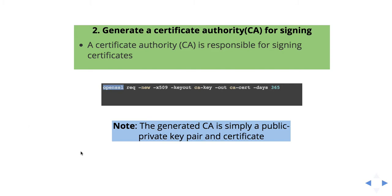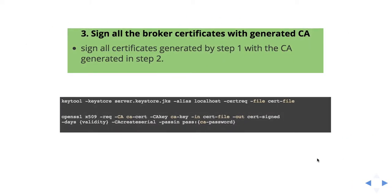In the future we will see how to sign the generated certificate. That is, how we can sign the certificate generated in step 1 by using the generated certificate authority. In this step we have to sign all the certificates generated in step 1 with the CA generated in step 2. So how can we sign that? We will see that.